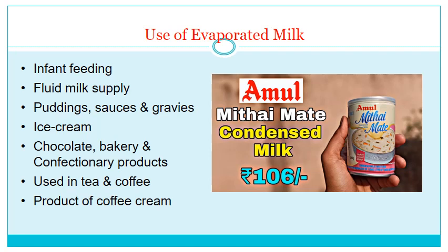The uses of evaporated milk — where sugar is not added and it goes through sterilization and canning — include: infant feeding, fluid milk supply, puddings, sauces and gravies, ice cream, chocolate, bakery and confectionery products, tea and coffee, and products like coffee cream.